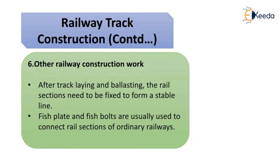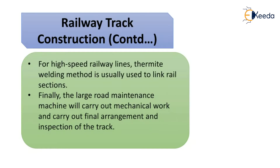After the track is laid and ballasting is done, the rail sections need to be fixed to form a stable line. Fish plates and fish bolts are usually used to connect the rail sections of ordinary railways. For a high-speed railway line, the thermite welding method is used. Finally, large road maintenance machines carry out the mechanical work and the final arrangement and inspection of the track.